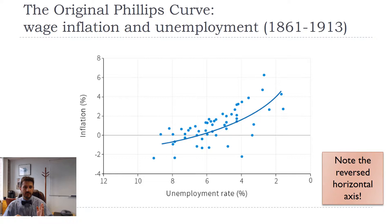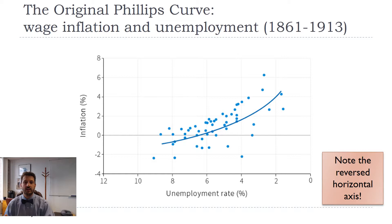What he plotted was wage inflation on the vertical axis and the unemployment rate on the horizontal axis. One thing to note about the way this book does the Phillips Curve is that they put the unemployment rate going from zero on the right to a higher number — 12% in this case — on the left. So higher unemployment is to the left, lower unemployment is to the right. What he saw was that when inflation was high, unemployment was low, and when inflation was low, unemployment was high.